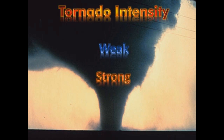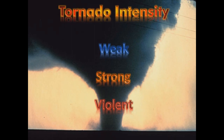Strong tornadoes, those of EF2 to EF3 in strength, account for about 10% of all tornadoes and about a third of all tornado deaths. They can last longer than 20 minutes, with winds of up to 165 miles per hour. Violent tornadoes, EF4 to EF5, account for only about 1% of all tornadoes but have the highest amount of deaths — around 70%. These tornadoes can stay on the ground for over an hour, cover several miles, and produce winds greater than 166 miles per hour, causing significant widespread damage.